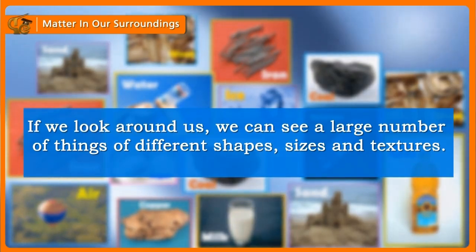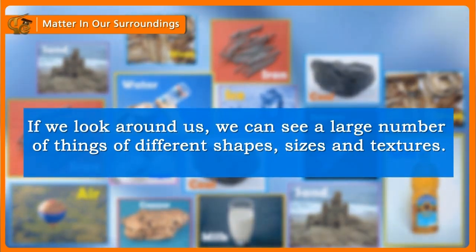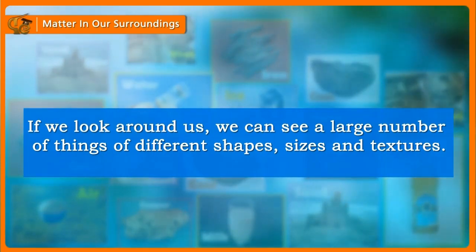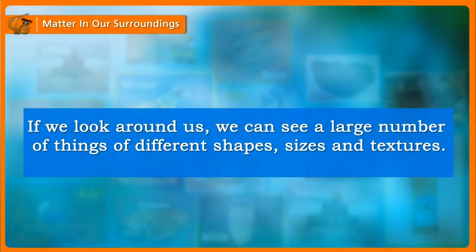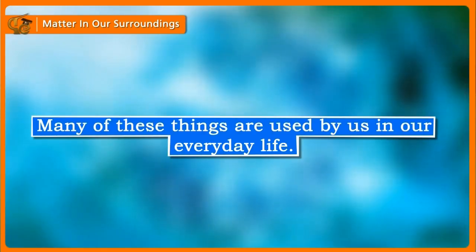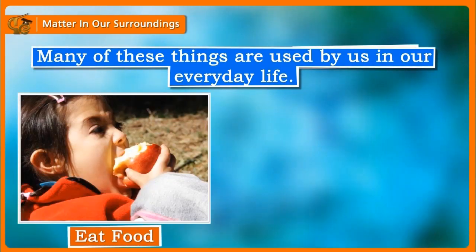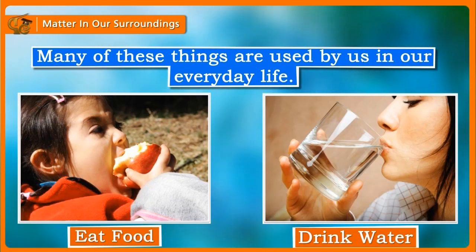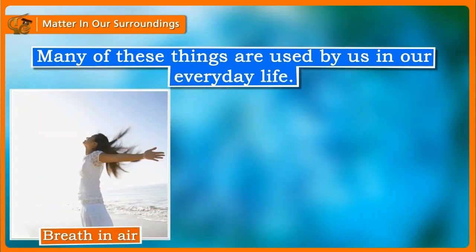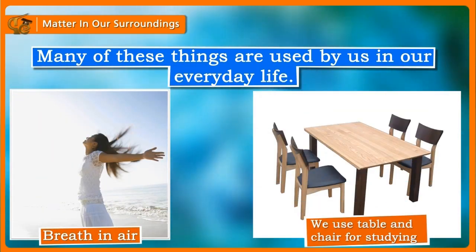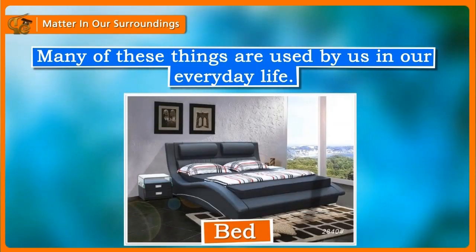If we look around us, we can see a large number of things of different shapes, sizes and textures. Many of these things are used by us in our everyday life. For example, we eat food, drink water, breathe in air and wear clothes. We use table and chair for studying and bed for sleeping.